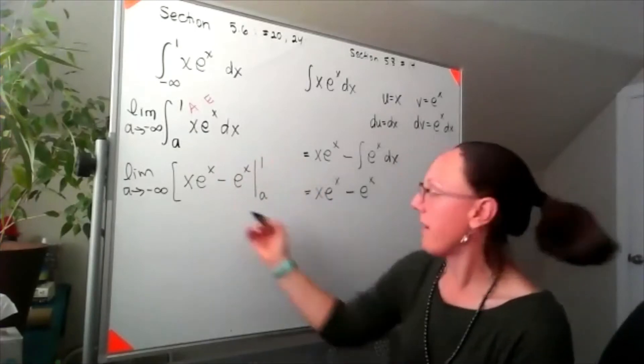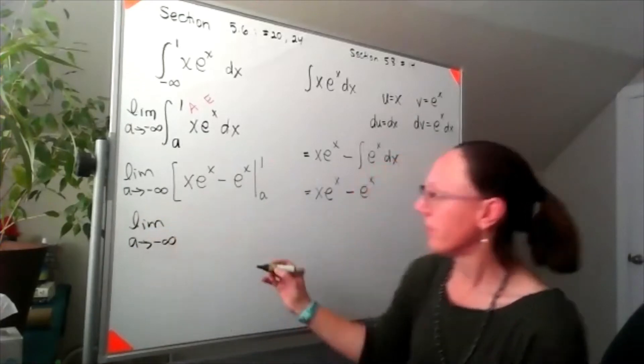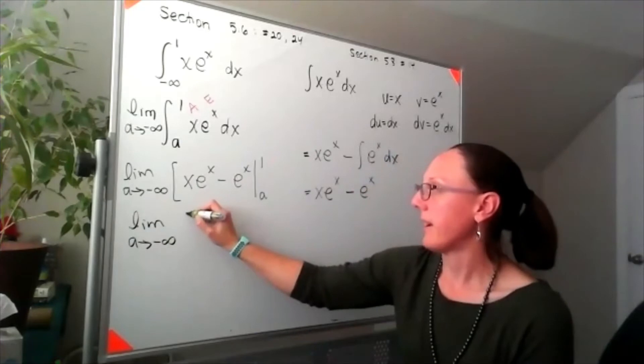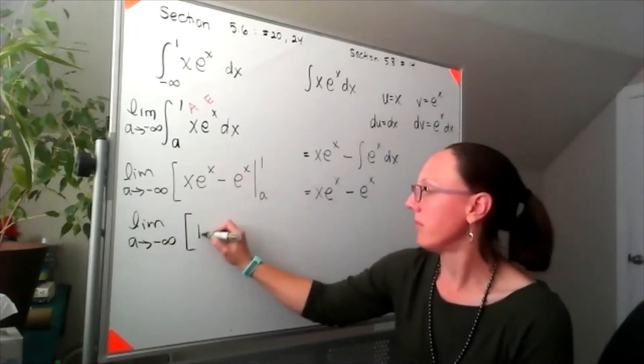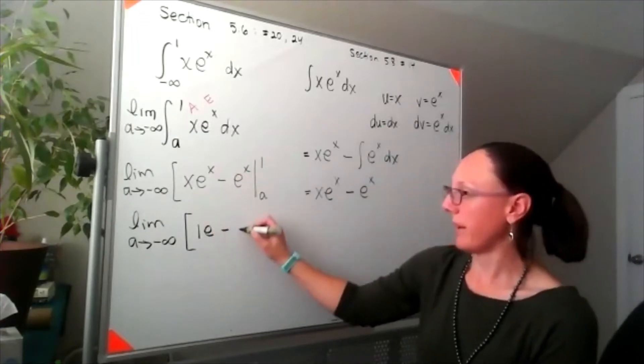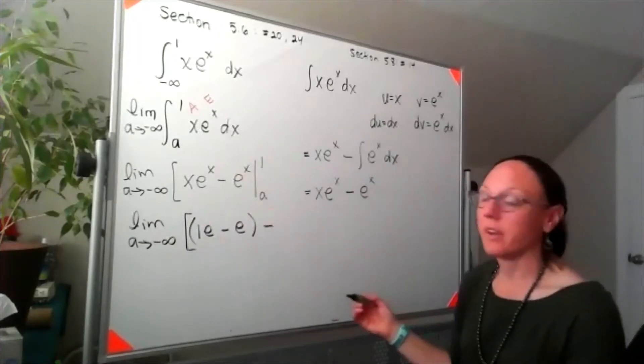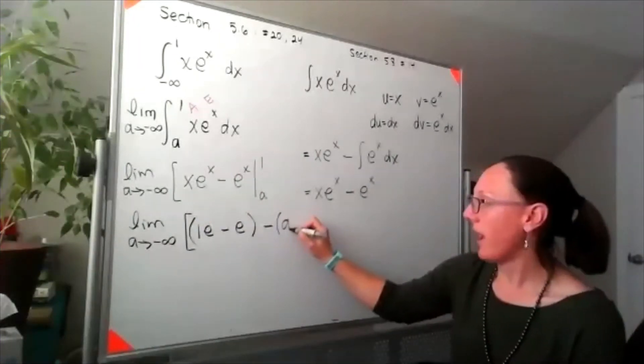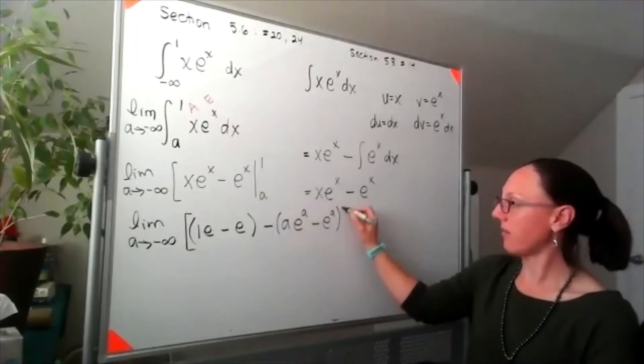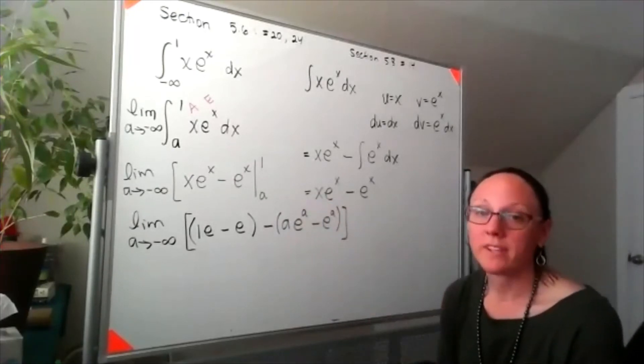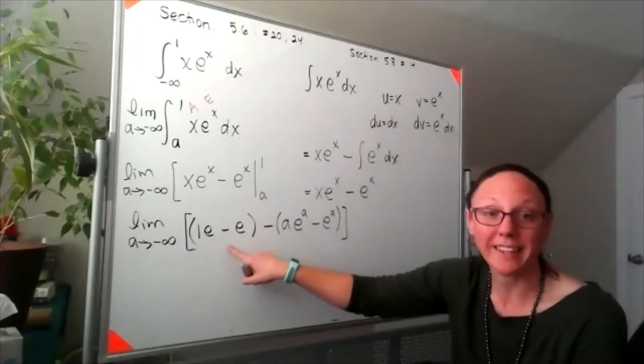Plugging in the 1 everywhere, I am looking at 1 times e minus e minus e, and then subtracting off plugging in a: a e to the a minus e to the a. Let's clean up the first part. e minus e is zero, so we don't really need that.